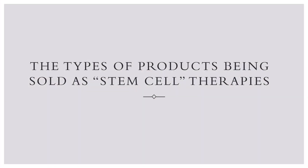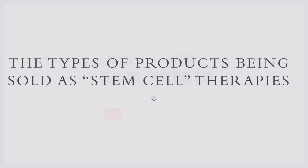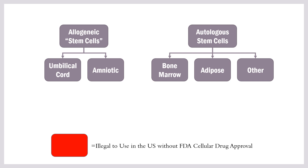Now we're going to get into the meat: the types of products being sold as stem cell therapies. This is the big picture map — we've got allogeneic cells from somebody else and autologous cells. The legitimate players in this space — meaning the ones that actually follow the research and go to the conferences — are using almost exclusively autologous cells. The fringe players in this space are primarily using allogeneic cells, and I'm going to show you why.